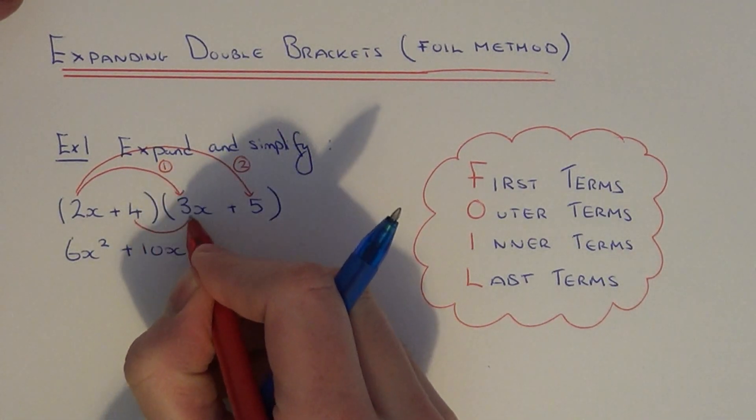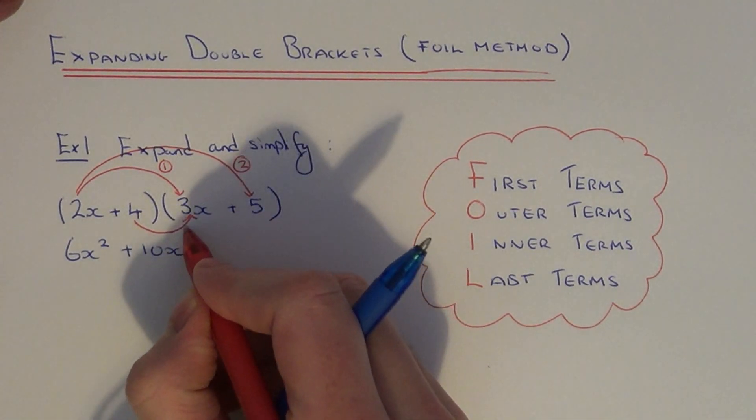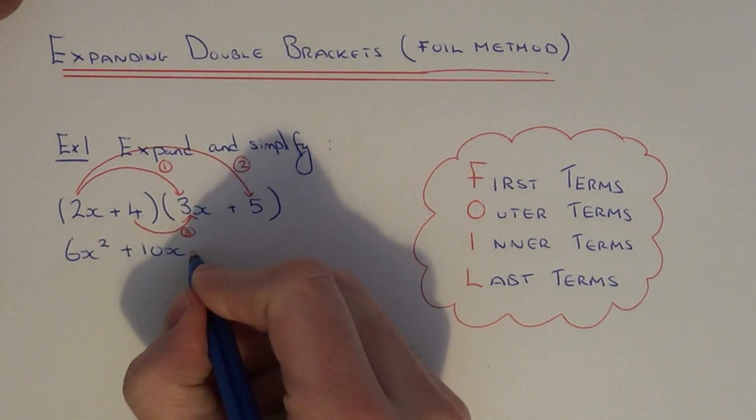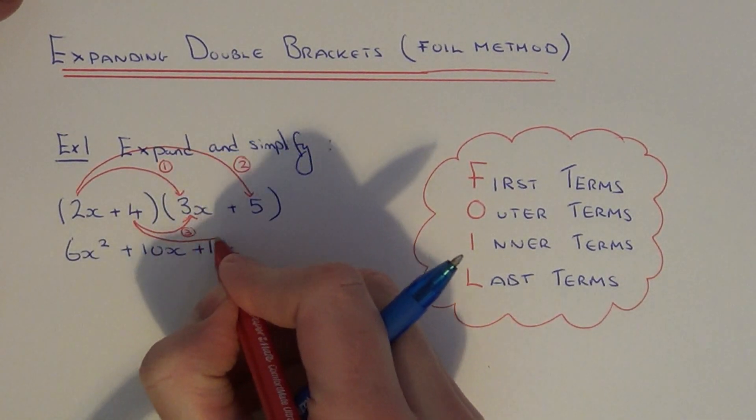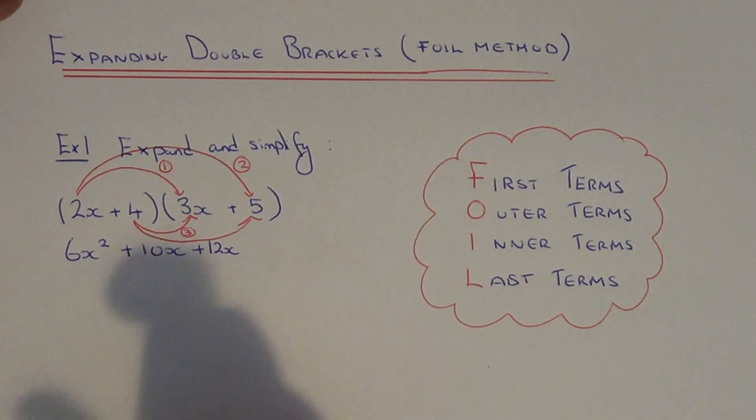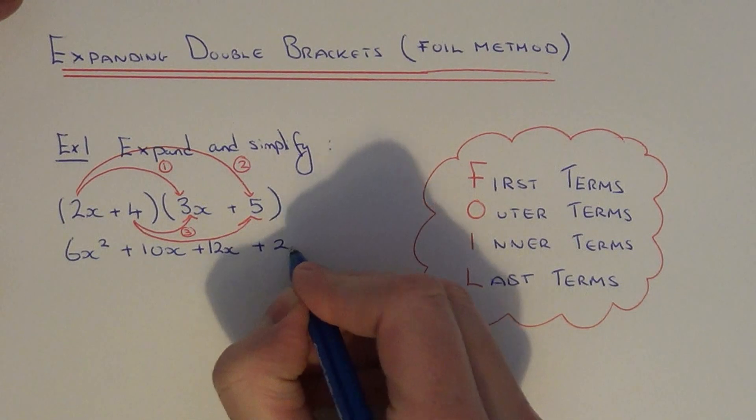Then you multiply the inner terms in both brackets. You do 4 times 3x which is 12x. Then finally multiply the last terms in each bracket. So 4 times 5 is 20.